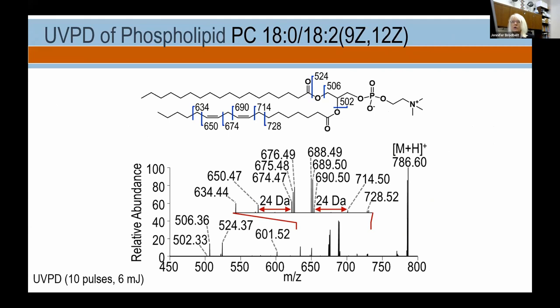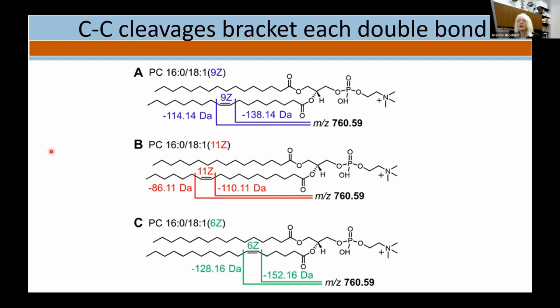For lipids with multiple double bonds, we get cleavages on either side of each double bond, so we see multiple 24 Dalton pairs. For example, we can assign positions at the 9Z and 12Z positions. In summary: we look for carbon-carbon cleavages that bracket each double bond. If the double bond shifts — 9Z, 11Z, 6Z — the neutral losses shift accordingly, and we see the corresponding signature ions in the mass spectra.